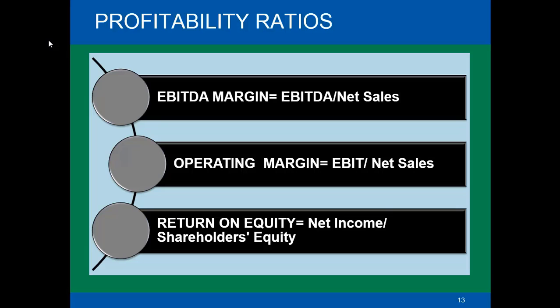Return on Equity should ideally be above 12 to 15%, because shareholders expect this kind of return from their investments. Investing in equity is risky, and they want a better return compared to a fixed deposit, which generally gives about 7 to 8% return. So if anyone wants to shift from fixed deposit to investing in shares, they would desire a return close to about 15%. The higher the return, the more shareholders will be attracted to that company.